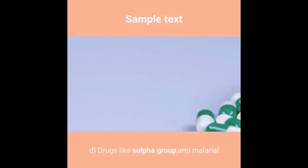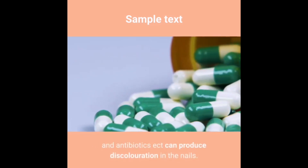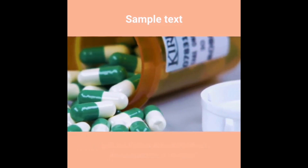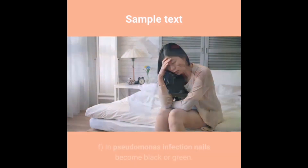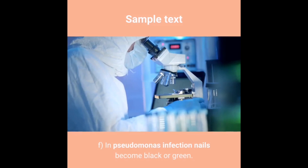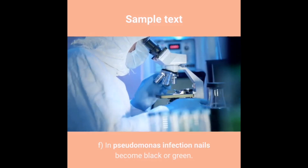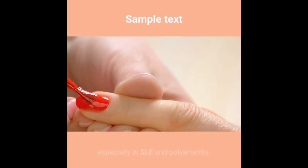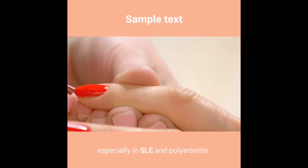D) Drugs like the sulfa group, anti-malarials and antibiotics can produce discoloration in the nails. E) Fungal infection causes black discoloration. F) In Pseudomonas infection nails become black or green. G) Nail bed infarction occurs in vasculitis, especially in SLE and polyarthritis.